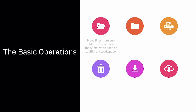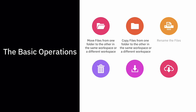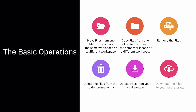A file can be moved to another folder from the same or a different workspace. A file can be copied to another folder from the same or a different workspace. A file can be renamed or deleted from the folder permanently. Files can be uploaded from local storage to the folder and downloaded into local storage from the AOC Files app.